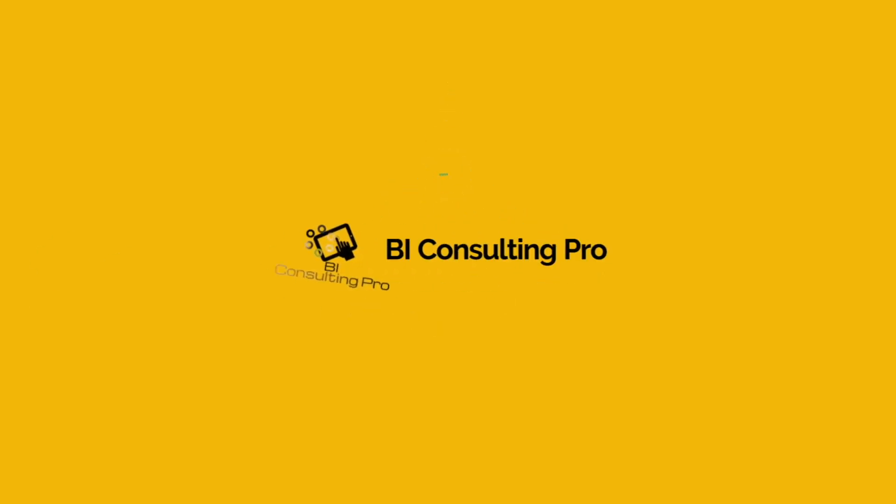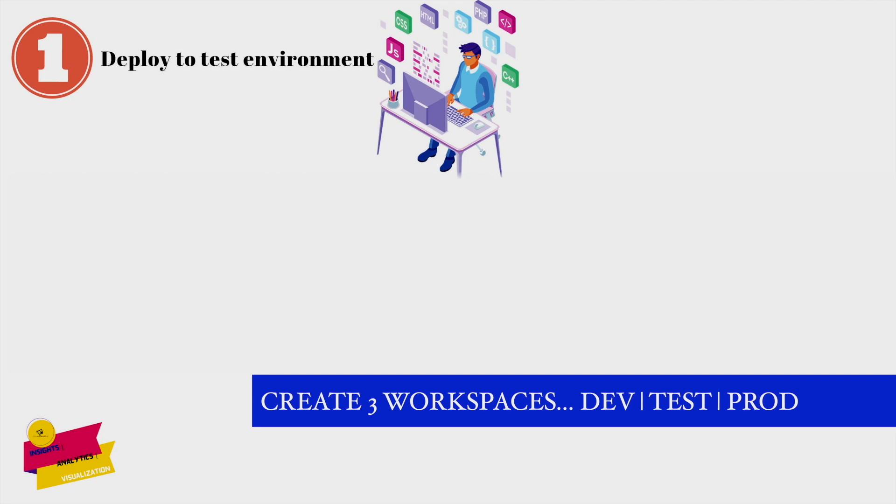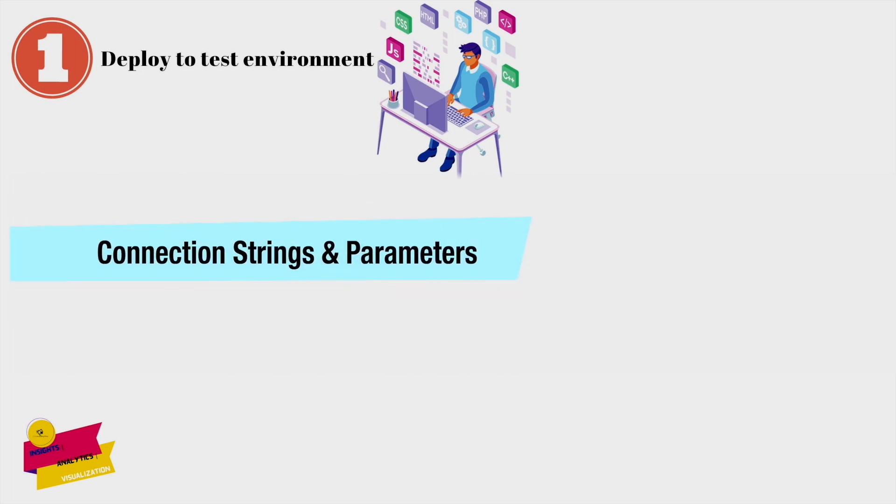The first step is deploying to the test environment. For IT-managed solutions or solutions critical to business productivity, there is generally a test environment where you validate the reports you have built. A test environment sits between development and production and is not necessary for all Power BI solutions. I highly recommend having three different workspaces: one for development, one for testing, and one for production. Key activities in the test workspace include connection strings and parameters, which were discussed in previous videos, and publishing datasets and reports to the test workspace.